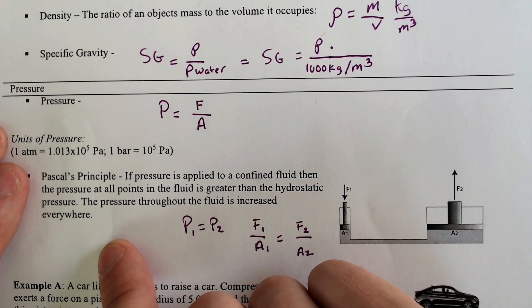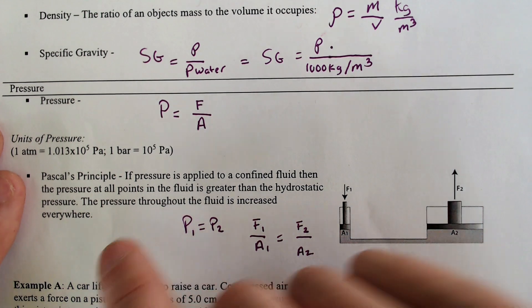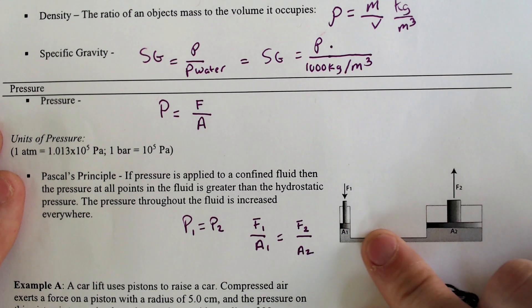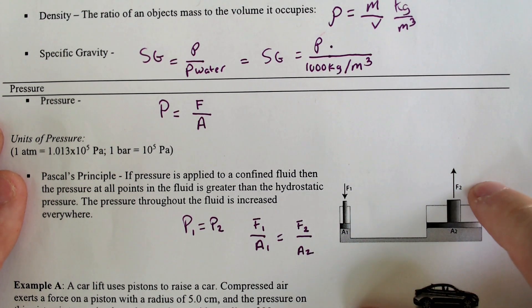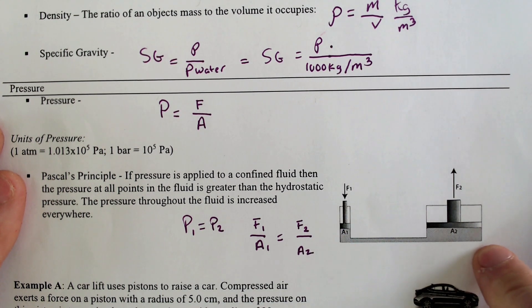So, essentially, if you apply a pressure to a fluid, the pressure is increased through the fluid everywhere, which explains why when you apply a force down here, it applies a force over here as well.